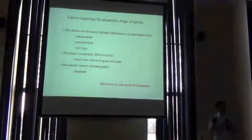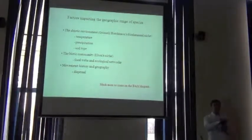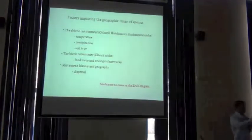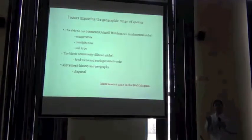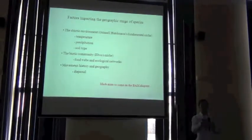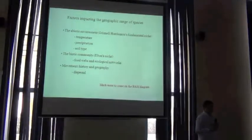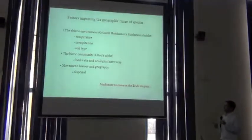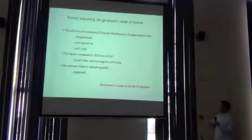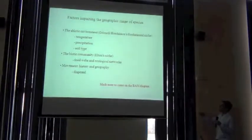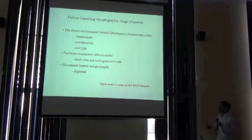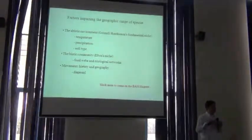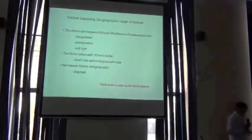Those from a different background might have been schooled in niches from an Eltonian perspective, going back to the work of Charles Elton. The Eltonian way of thinking is that the niche really is a species placed within the ecological environment, within the biotic environment, within an ecological community. So we have the abiotic environment, the biotic environment, and then dispersal — movement, history, and geography — all restricting species distributions.